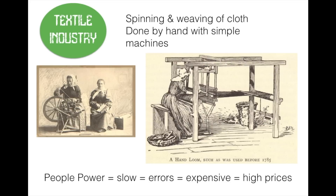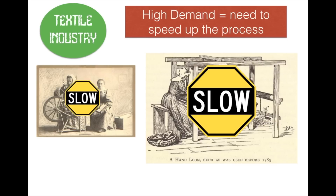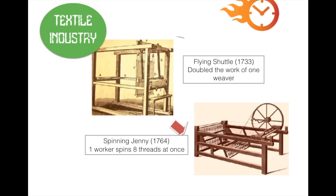England industrializes first in its textile industry. For hundreds of years, everybody made textiles the same way — by hand. Spinning and weaving cloth was done on simple spinning wheels and hand-powered looms. The problem is that people power is slow, people make mistakes, and people power is expensive, resulting in high prices. With population growth driving high demand, there's a need to speed up the process of making textiles, since everybody needs clothes.